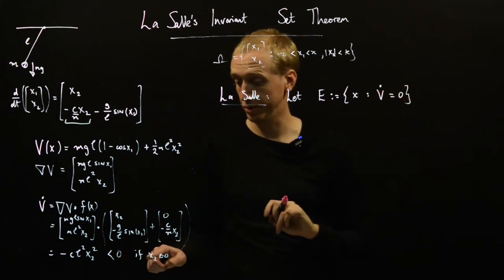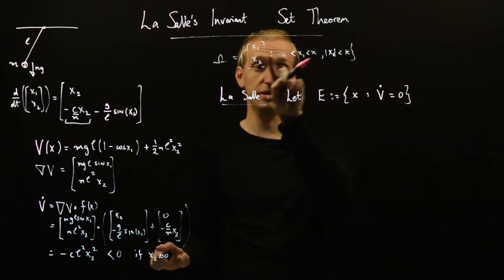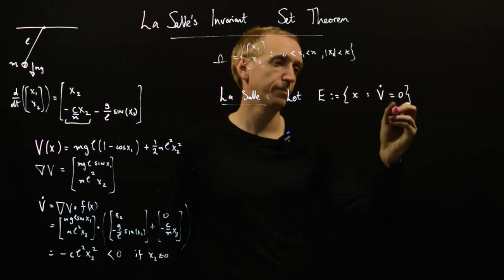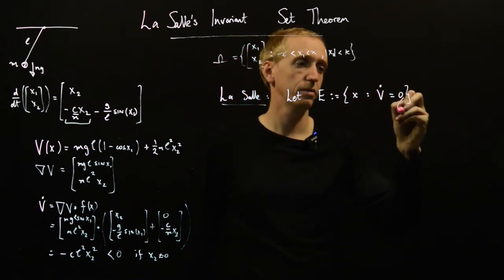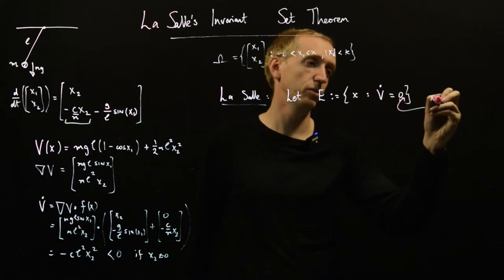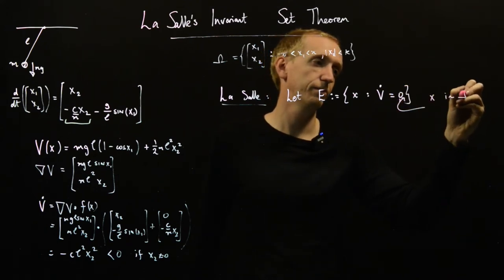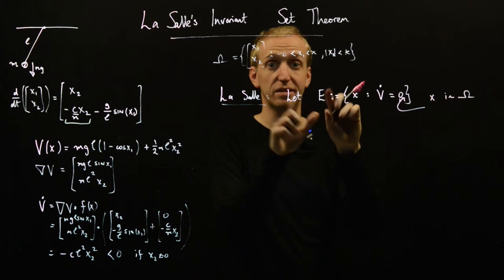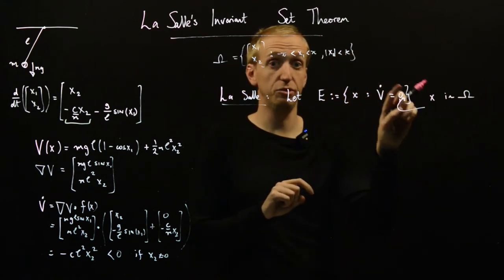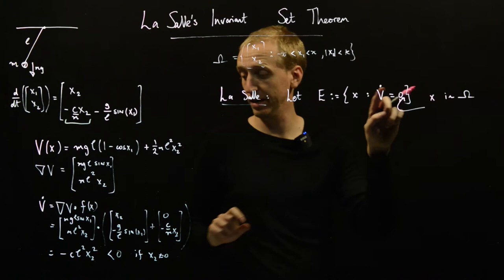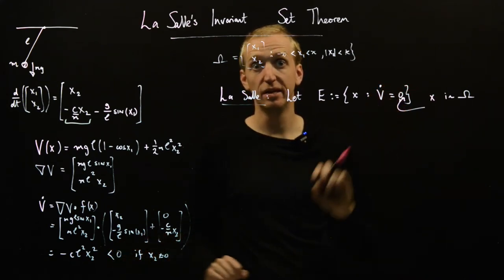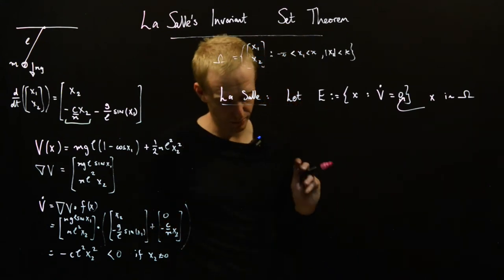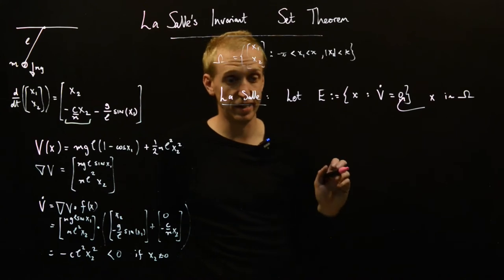But for example, this would correspond to the values where x2 was equal to zero in our set omega. So let E be this set here with x in omega. So we look at all the values in the state space in our big set omega, and E is the subset of those values for which V dot is equal to zero. So these are the points where we're failing to satisfy our strict Lyapunov inequality, and we only get less than or equal to.